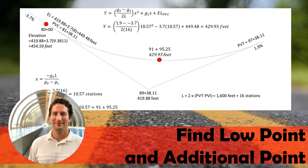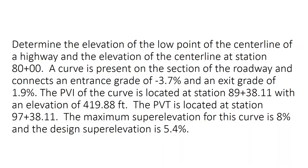In this example problem we're going to find the low point and an additional point related to this vertical alignment. For our given information, we're told to find the elevation of the low point of the centerline and the elevation of the centerline at station 80. So we're looking for two different points here.